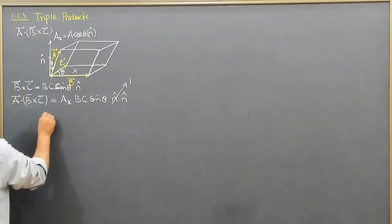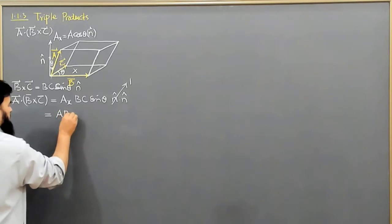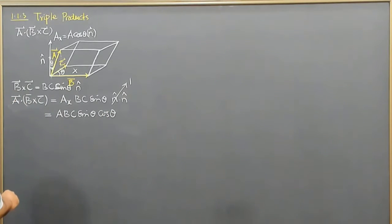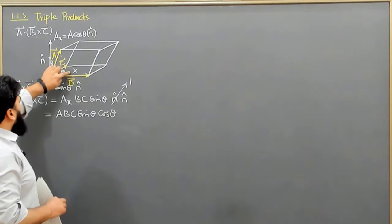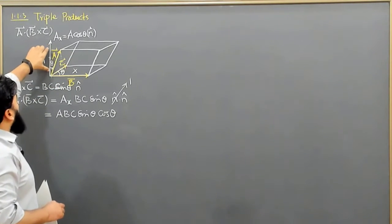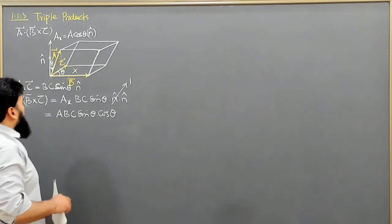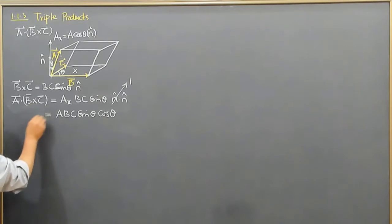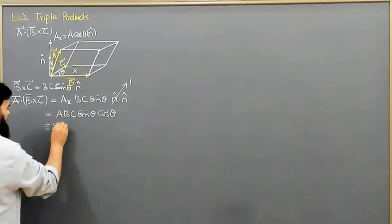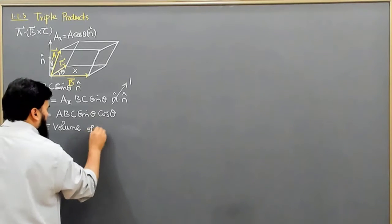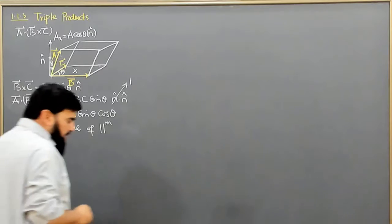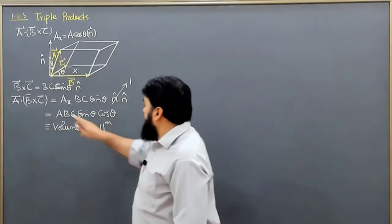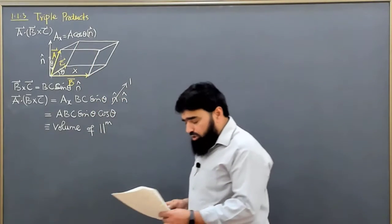So we have A·(B×C) = A·BC·sinθ·cosθ. Now, B×C makes the base of it and A·cosθ is the height of it. Base times height means the area — this is the surface area multiplied by the height, and it gives us the volume. A·(B×C) actually gives us the volume of this parallelepiped: first B×C makes an area, then we raise that area up by A·cosθ, and this makes the volume.